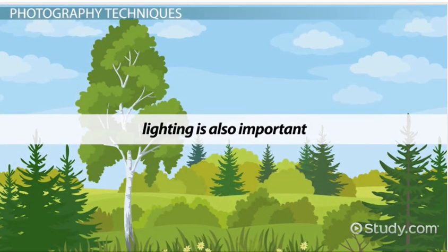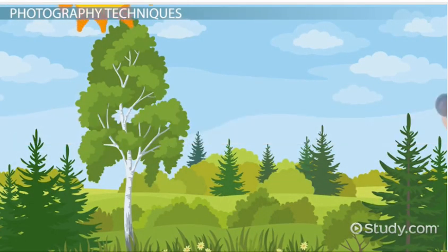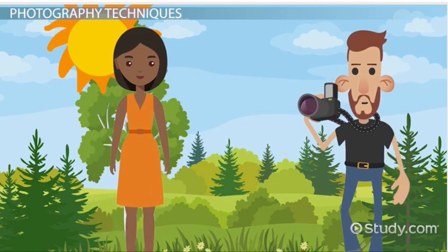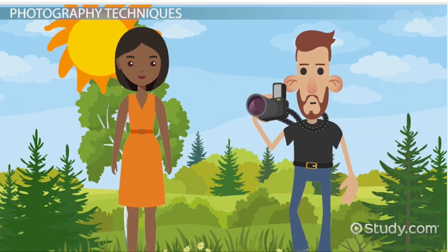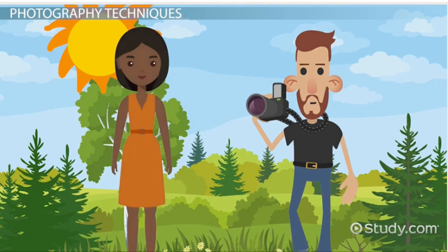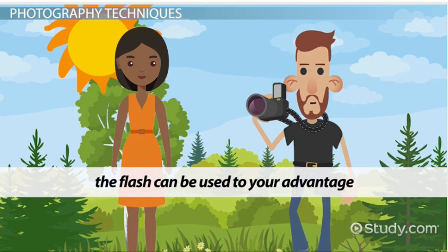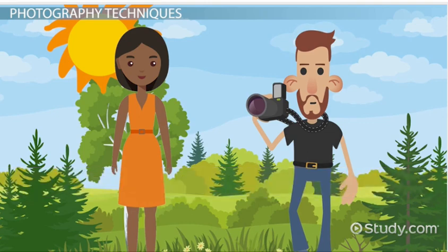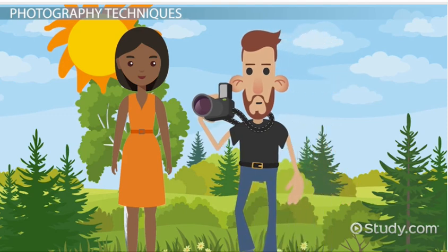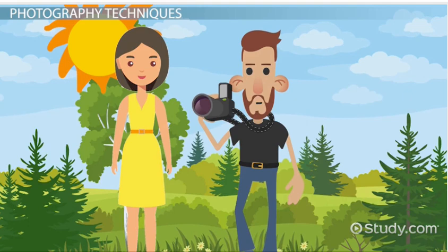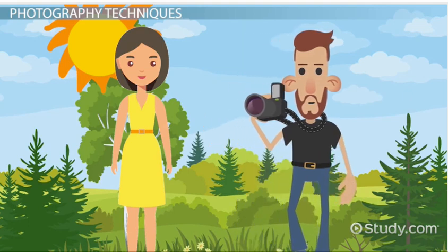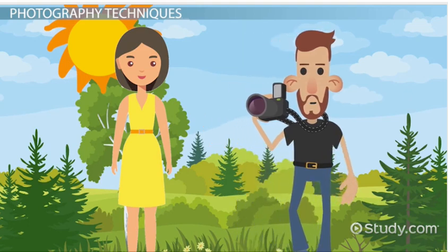Lighting is also important. If you're taking a picture of someone outdoors, make sure the sun isn't behind them, because chances are the sun will overwhelm the shot and you won't be able to see the face of your subject. Also important is the flash — sometimes the flash can be used to your advantage, flooding darkened areas with light. Be careful with the flash though, because if you get too close to your subject, they'll get washed out and look like they're glowing. You can also turn your flash off if you're outdoors or somewhere with a lot of good lighting.